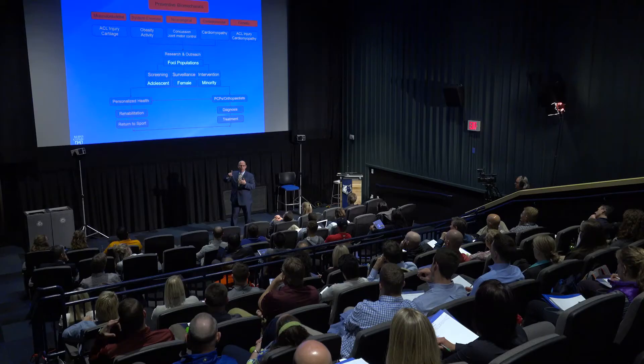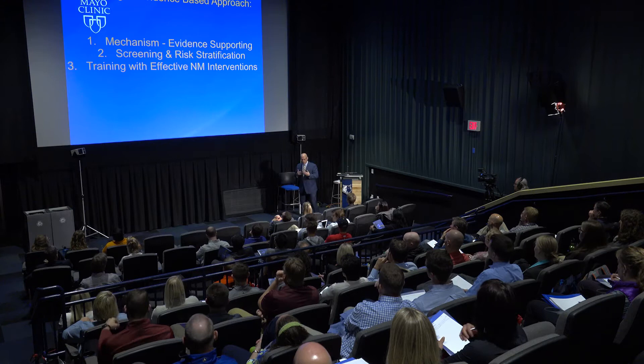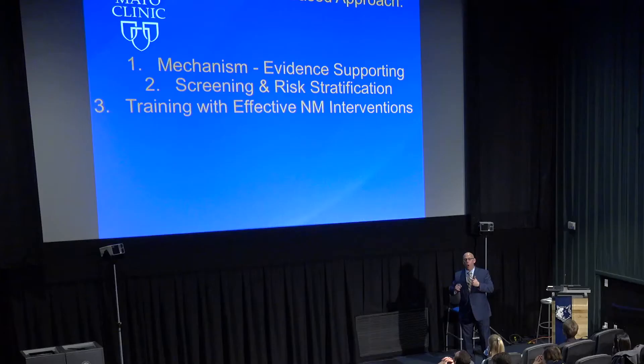We're going to focus on primary prevention — prevention of the first injury — today, and tomorrow will focus almost exclusively on rehabilitation and prevention of second injuries, which are a big problem. The best predictor of any injury is prior injury. We take a three-pronged evidence-based approach: we look at mechanisms and evidence supporting those mechanisms of injury, then do screening and risk stratification of athletes.